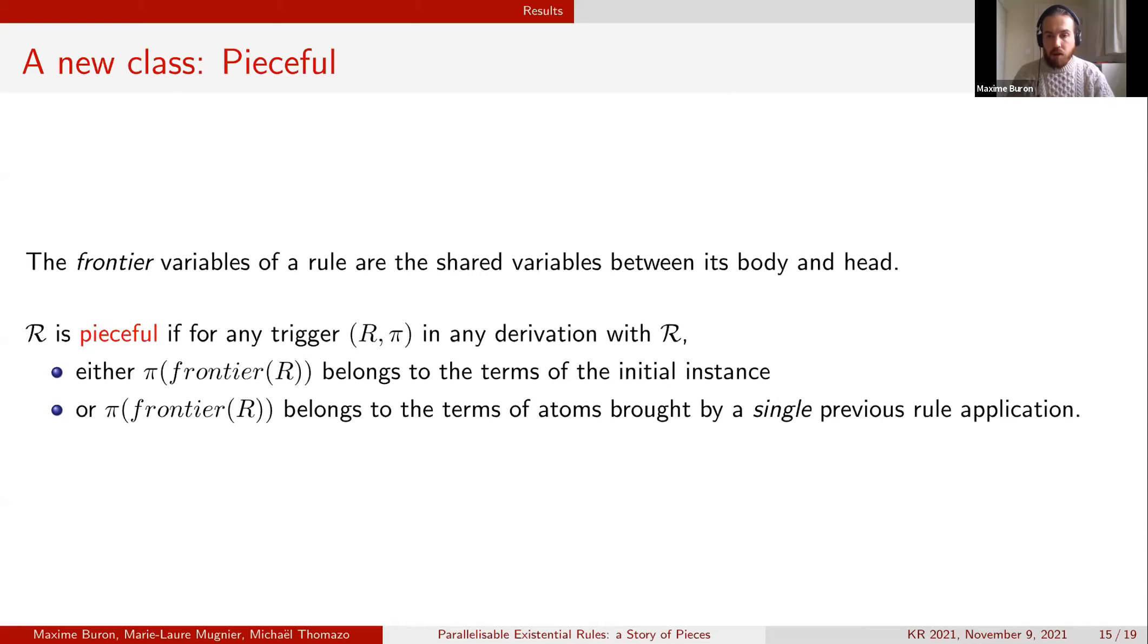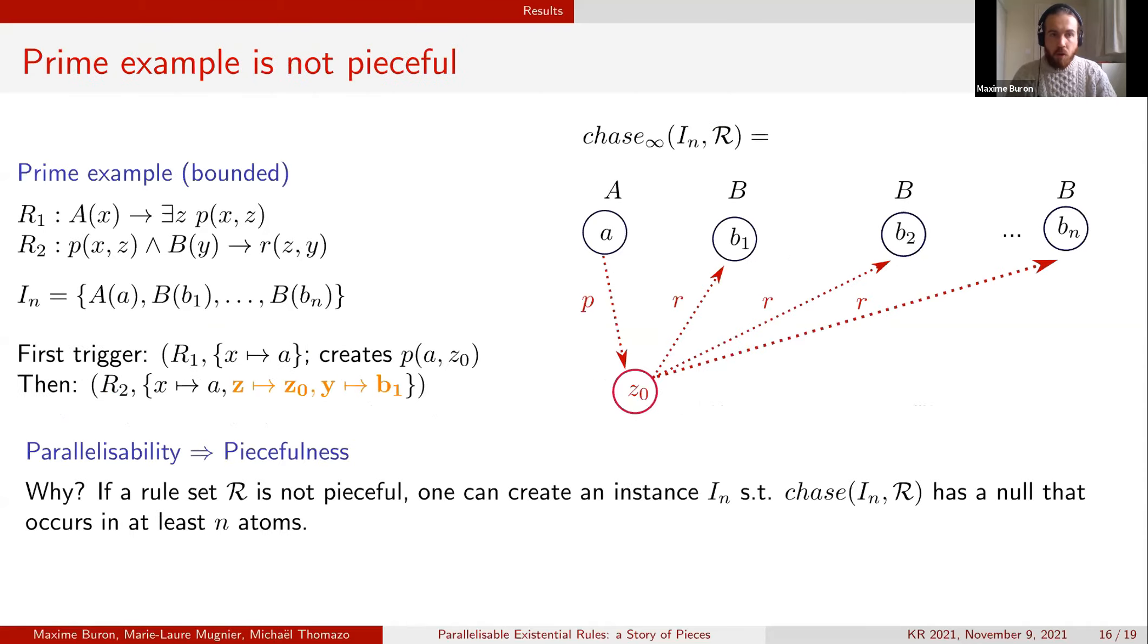We can check now that actually the prime example is not peaceful. We will see that in the second rule application R2 where the frontier variables are z and y.